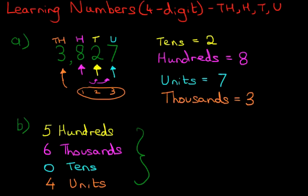Now what I like to do is, I like to write this down. For the first time, if you're not very sure or confident, just write down the labels. We've got units. To the left of units is tens. To the left of tens is hundreds. And to the left of hundreds is thousands.